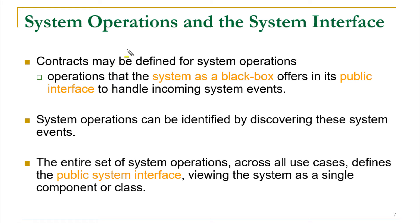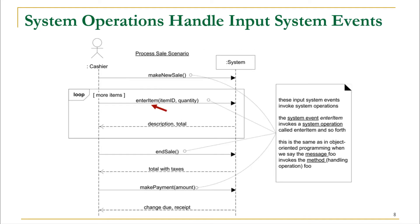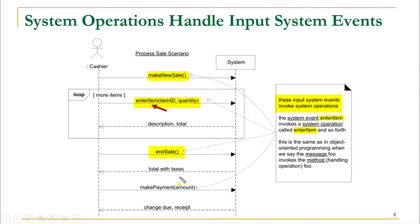To start working with operation contracts we must look at system operations. System operations are actually invoked as a result of incoming system events — whenever an event occurs we call a system operation in response. Looking at the system sequence diagram we created earlier: the input system events invoke the system operation. For example, the system event 'enter item' invokes a system operation called enter item, and the system event 'end sale' invokes the system operation called end sale. For every system operation — make new sale, enter item, end sale, and make payment — we can write system operation contracts.